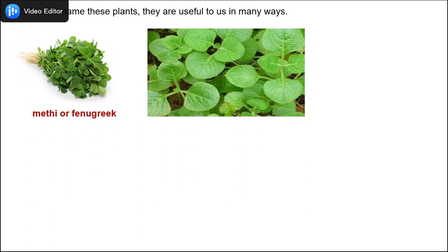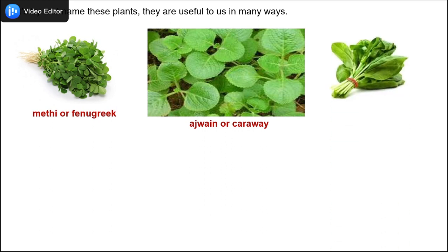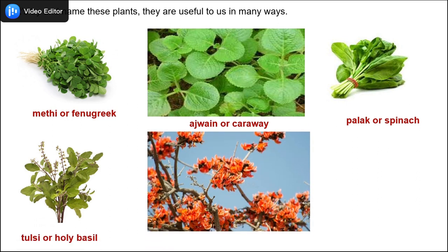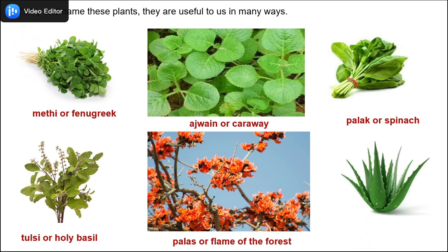Let's try and name these plants. They are useful to us in many ways. The picture on your screen shows methi or fenugreek, ajwain or caraway — a good plant for treating cold — palak or spinach, tulsi or holy basil — again medicinal — palash or flame of the forest, and aloe vera, which again has medicinal value.